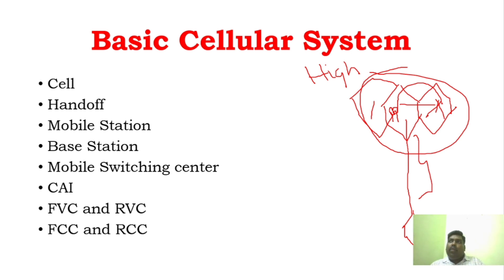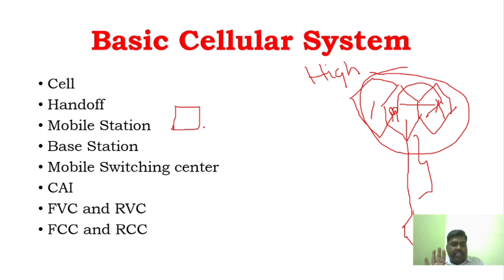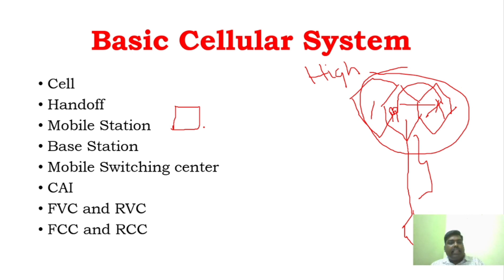And mobile station - what is mobile station? It is the mobile device. The mobile station has a transceiver, an antenna, and control circuitry. This is the mobile device.